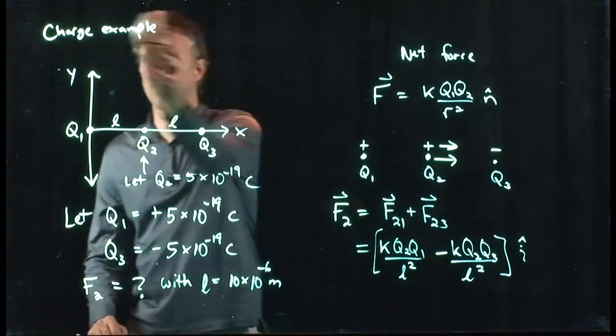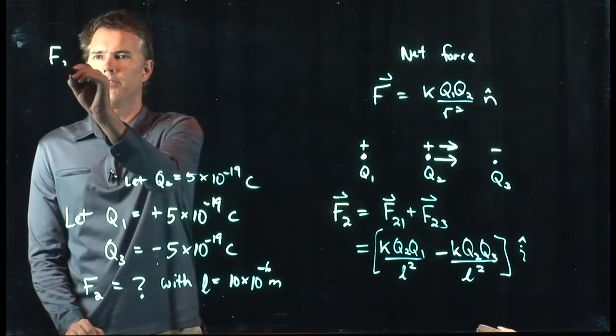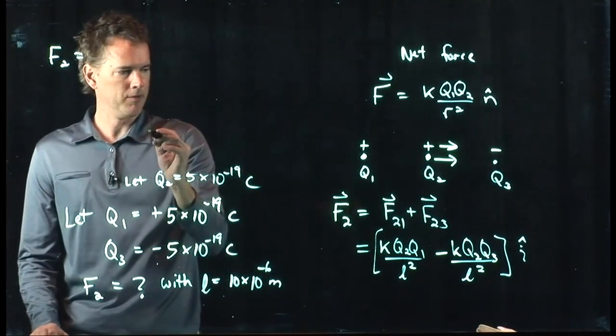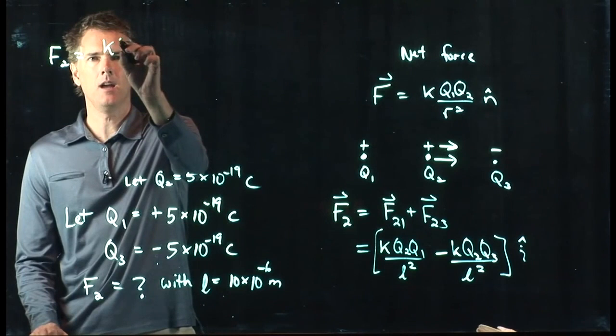Alright, so let's try it with some of these numbers and see what we get. Let's calculate F2. We said that it is, well, it looks like we have some common factors here, right? We have a k q2 over L squared.